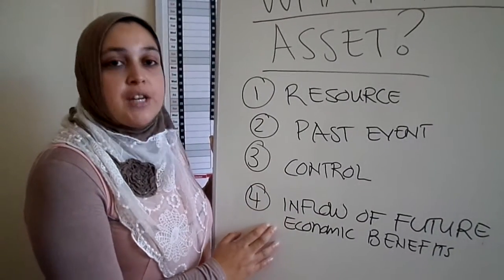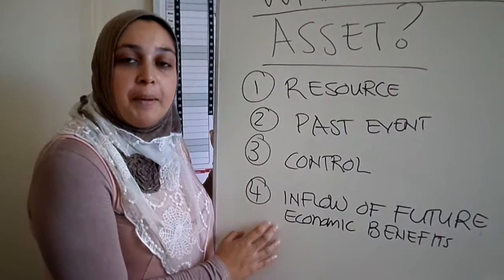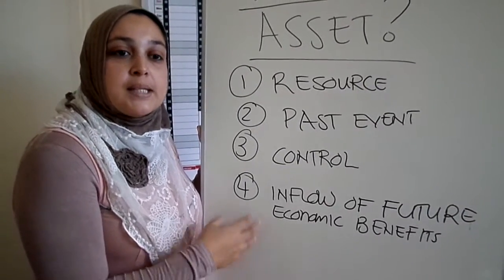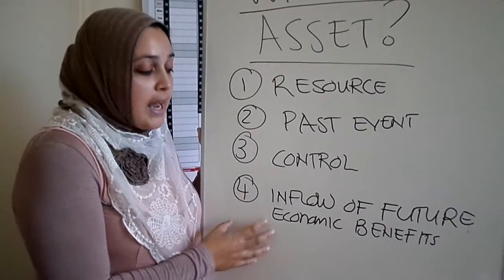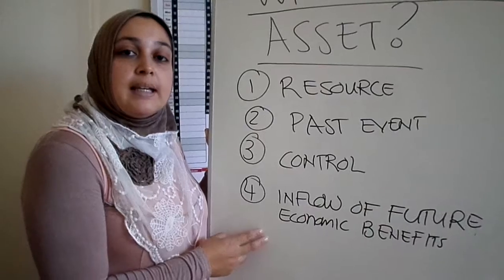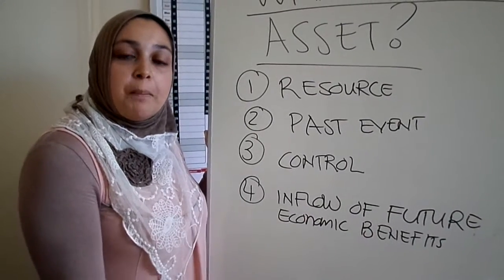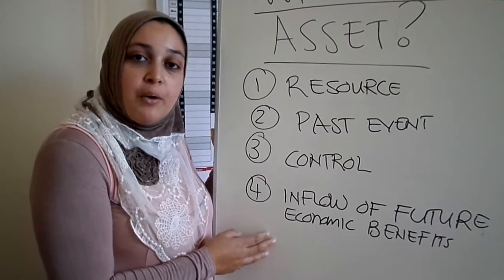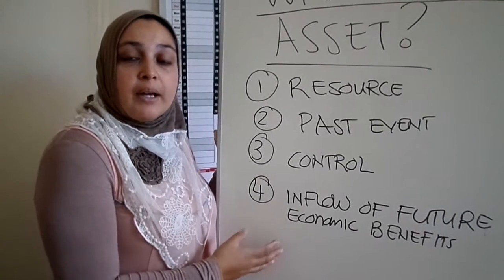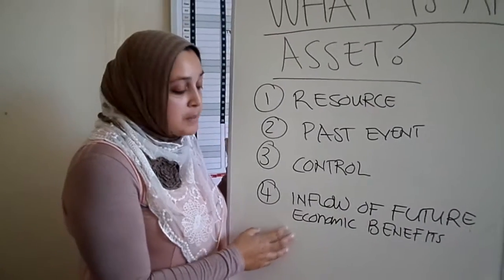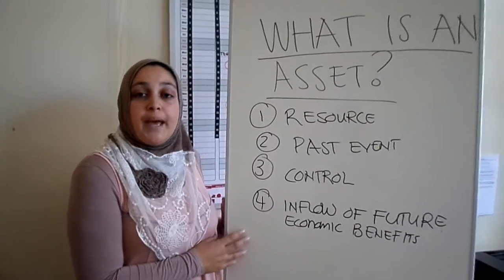And the last part of the definition is an inflow of future economic benefits. What does this mean? This means that there needs to be some sort of gain that you are getting from this asset. And if you purchase equipment, what is that inflow? There can be two things. Either after using the equipment for a while, you sell the asset and then you get money. That can be the inflow. Or you produce products which you sell. And those products then will generate income. So there must be some sort of benefit which you are getting from the asset.